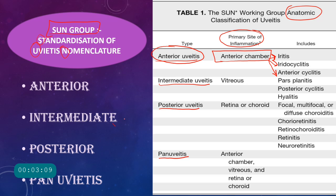In intermediate uveitis, the site of inflammation is the vitreous base area. Subtypes include posterior cyclitis, where only the pars plana is involved; hyalitis, affecting the anterior hyaloid or vitreous; and pars planitis, which is an idiopathic type of intermediate uveitis with no associated systemic disorders. Pars planitis has two specific signs: snow banking and snowballs.